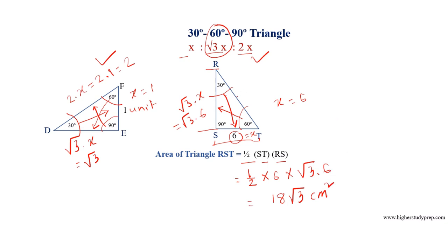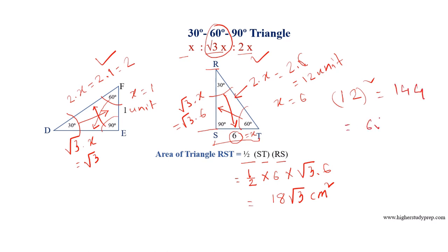It is to be noted that the hypotenuse has a length of 2X equals 2 multiplied by 6 equals 12 units. As a right triangle, the sides follow the Pythagorean theorem: 12² equals 144 equals (6√3)² plus 6² equals 108 plus 36, which equals 144. This verifies the Pythagorean theorem.